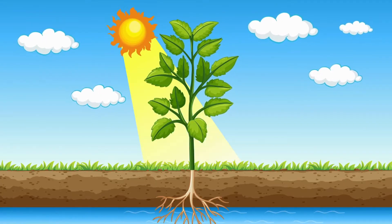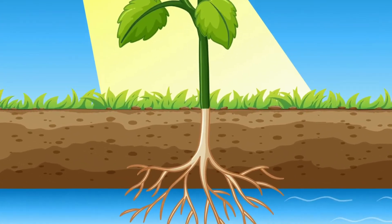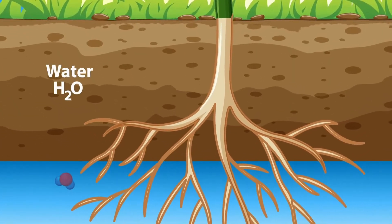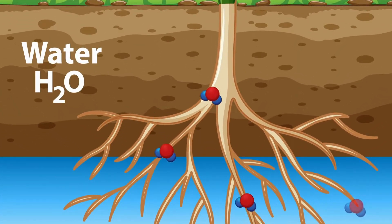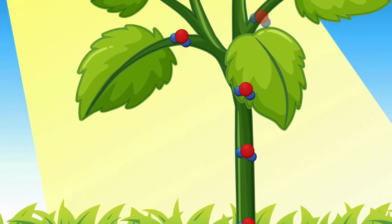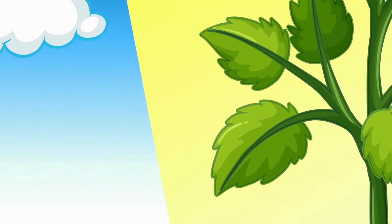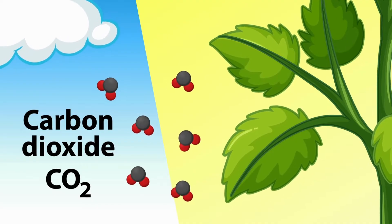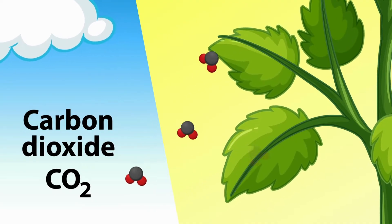The plant also needs sunlight, which provides the energy needed to power the process of photosynthesis. Water molecules are absorbed by the roots and travel up through the plant's stem to the leaves. Once the water reaches the leaves, the plant is ready for the next step, combining it with carbon dioxide and sunlight to make food.